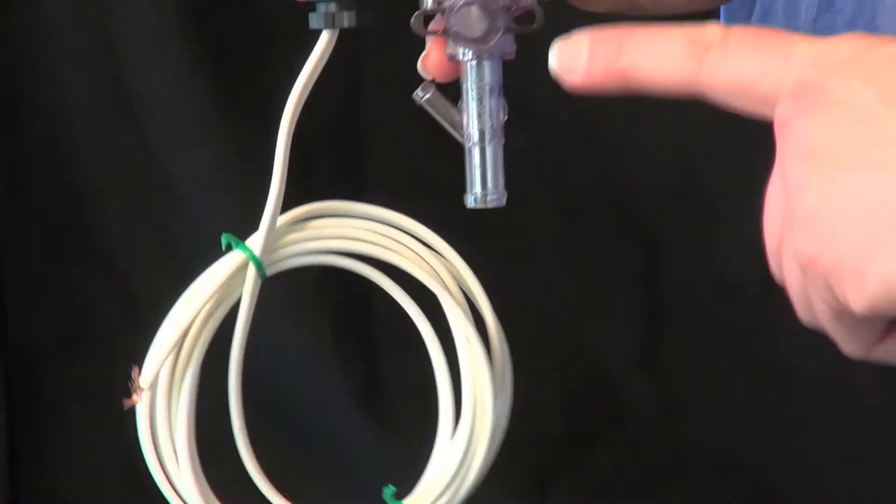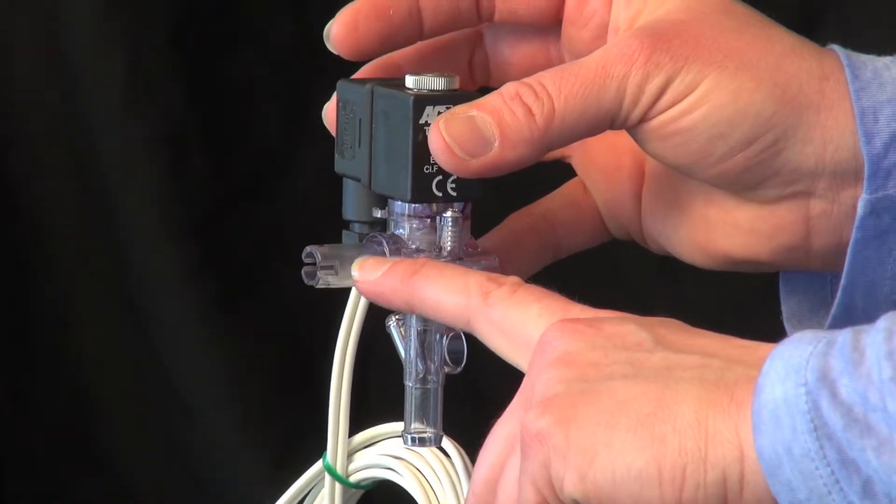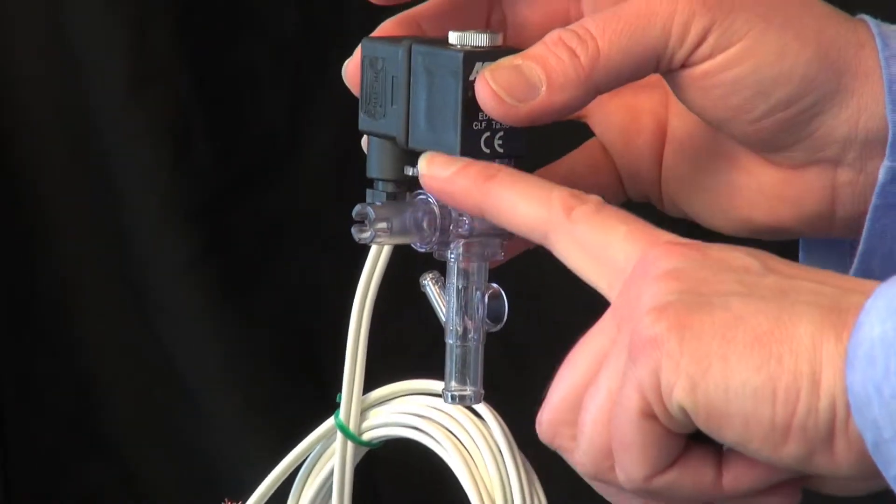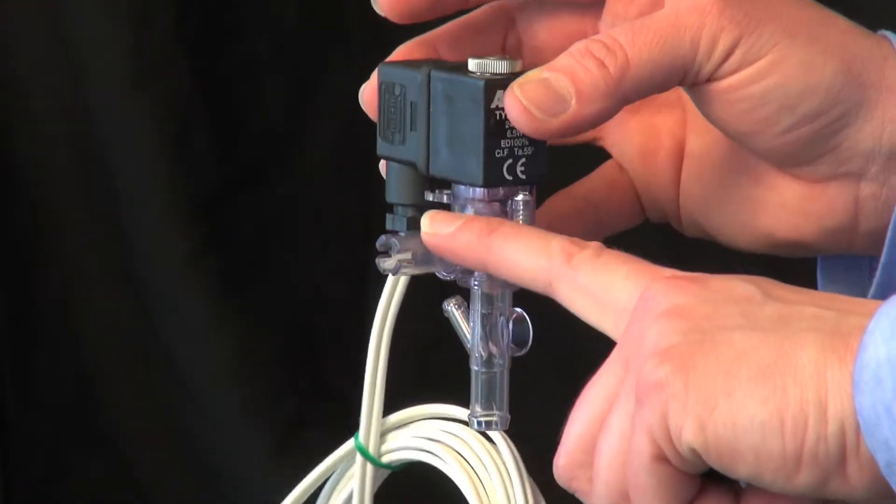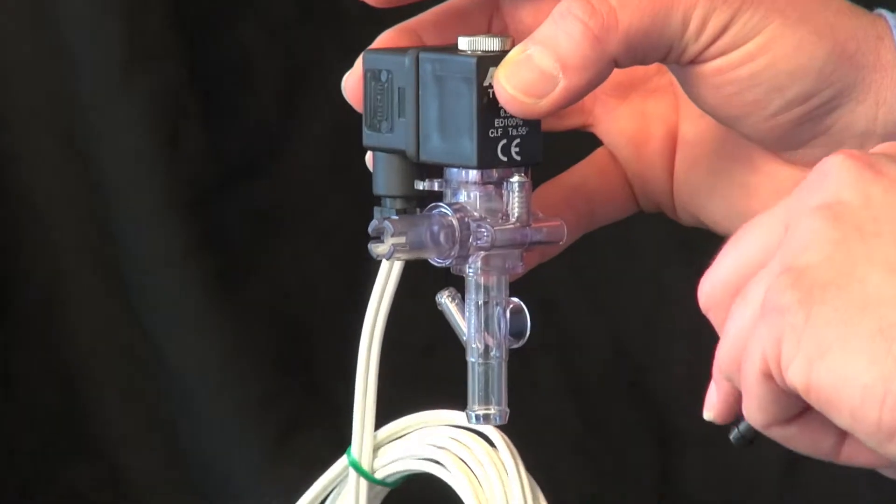It also comes with a small adapter. When you're looking at the solenoid, here from the side angle you can see the front of the solenoid is the fill. So you will connect this via tubing, 3/8 inch tube, to the tank of your nutrient solution that will be mounted above it.